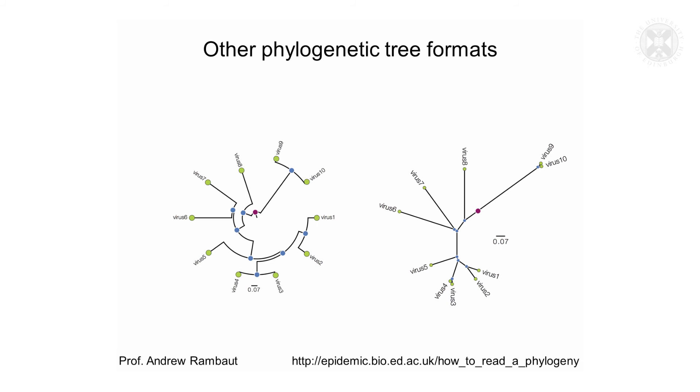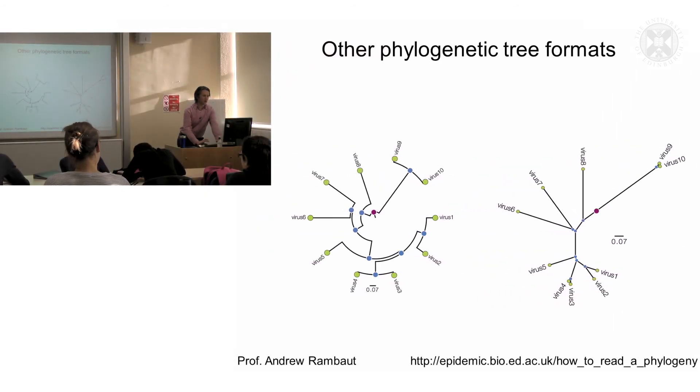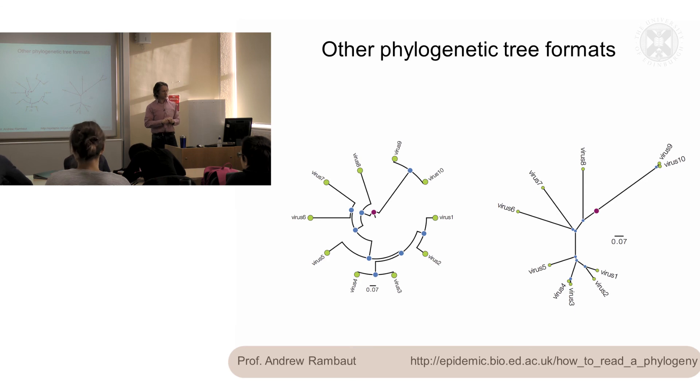And what I've shown you is kind of a standard rectangular format of the trees. You can get other formats. This is exactly the same set of sequences. Yeah, so these are other different formats of phylogenetic trees. And I'll point you to this website which is my colleague Professor Andrew Rambaut who's based at the King's Buildings has put together which very nicely goes through how to interpret a phylogenetic tree.